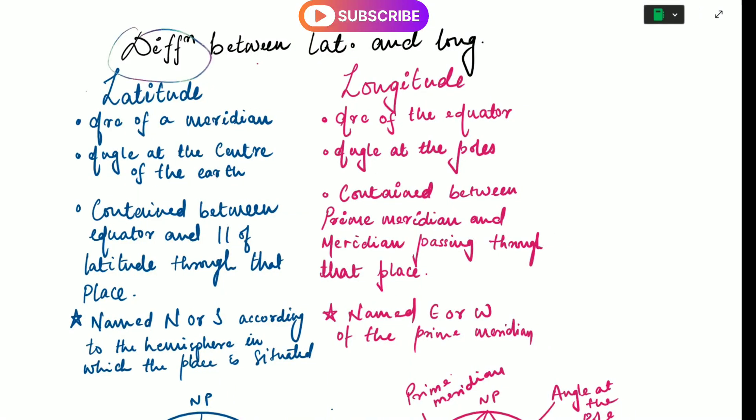The difference between latitude and longitude: latitude is the arc of the meridian, but longitude is the arc of the equator. Latitude is the angle at the center of the earth, whereas longitude is the angle at the poles.